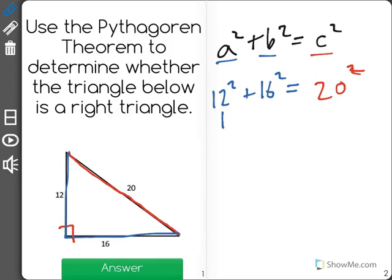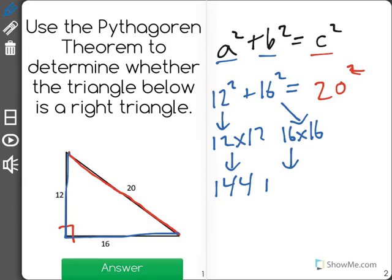So really what 12 squared means is 12 times 12, and that's equal to 144. 16 squared, well that's 16 times 16 or 256. And 20 times 20 is equal to 400.